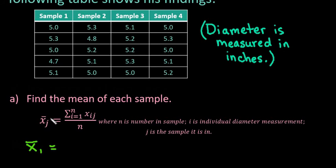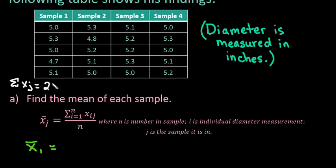We use subscripts, especially when working with more things, just to keep track of which one we're talking about. You could write the sums individually or keep it in table form. To find the sum of sample one, we add 5, 5.35, 4.7, and 5.1, so the sum of that column is 25.1. The sum notation — the sum of Xij from one to n — just means you start with the first observation and stop at however many are in that sample, which in this case is five.